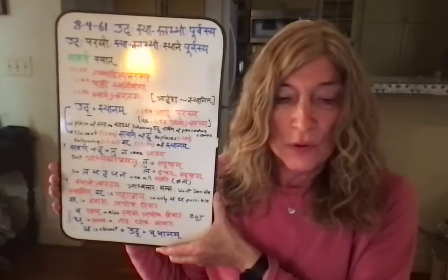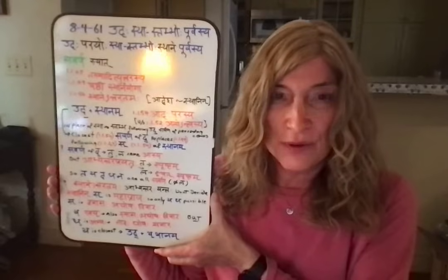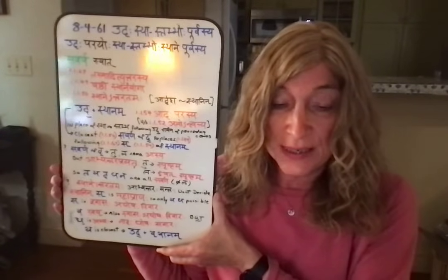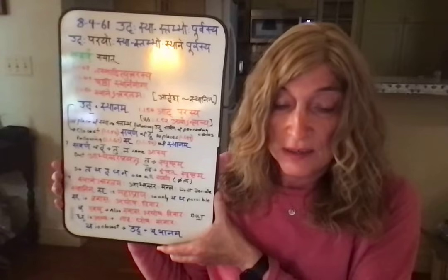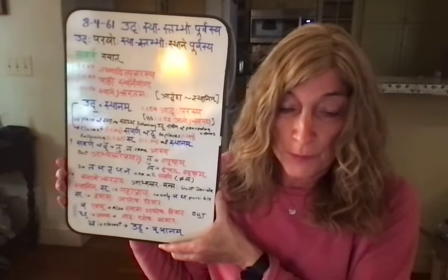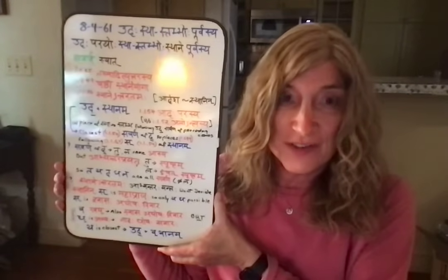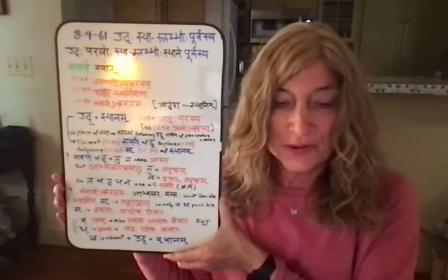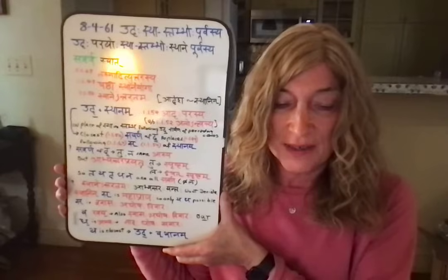We're considering ut plus sthānam. Stha follows ut. The bottom line is: in place of the si of stha following ut, the savarṇa of da comes. The question then becomes: what is the savarṇa of da which is most similar to si? The first question is: what are the savarṇas of da?